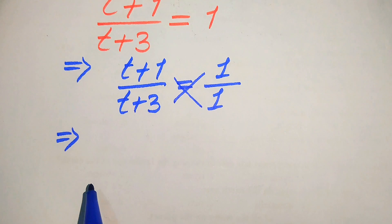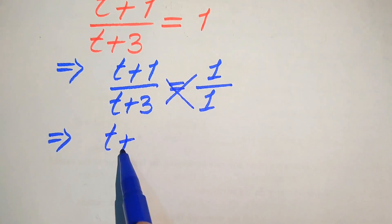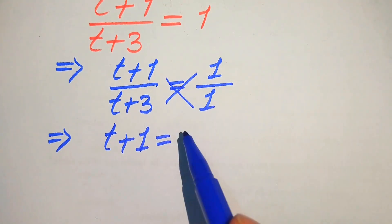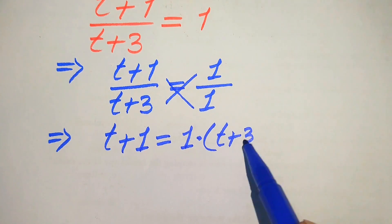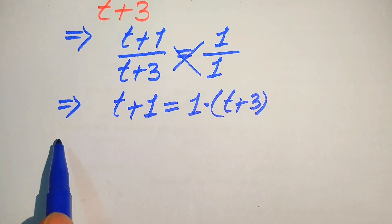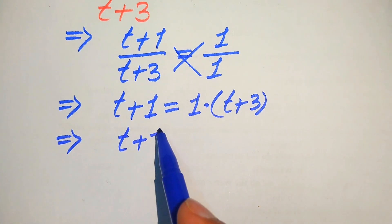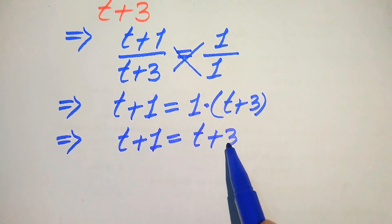So when you cross multiply the terms, it will be written as 1 times this value equals t plus 1, which equals t plus 3 times 1, which is also t plus 3. So we rewrite this equation as t plus 1 equals t plus 3.